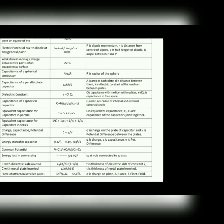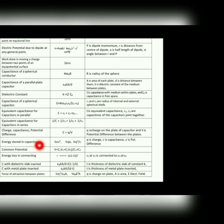Charge, capacitance, and potential difference: the basic formula is C = Q/V, from which Q = CV. Energy stored in a capacitor — we derived three formulas: (1) ½CV², (2) ½QV, and (3) Q²/(2C). All three formulas must be remembered.